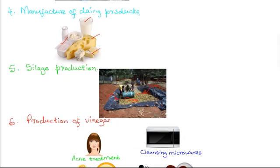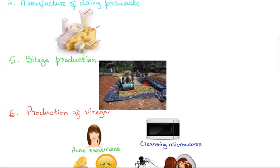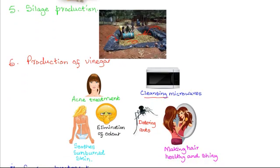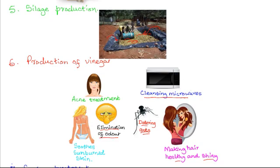Then there is the commercial production of vinegar. Vinegar is a combination of organic acids such as ethanoic acid, citric acid, butyric acid, and oxalic acid. Vinegar has a number of uses, including cleansing of kitchen appliances like microwaves, deterring ants, and being used as a repellent for insects. It can be applied on hair to make it healthy and shiny, used in the house to eliminate bad smells, applied on skin to soothe sunburned areas, and also applied on areas of skin affected by acne.